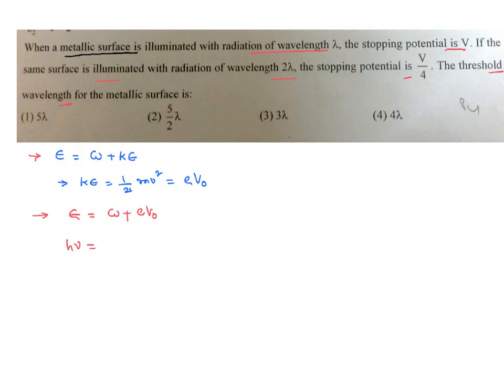Energy could be written like h nu, work function could be written like h nu₀, where nu₀ is called threshold frequency. As you want in terms of wavelength, nu can be written like c by lambda, hc by lambda₀ and ev₀. That is the first case when the wavelength lambda is there.